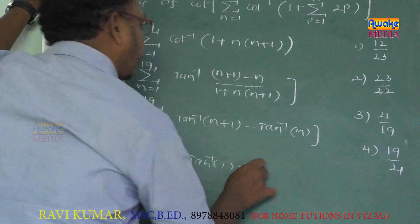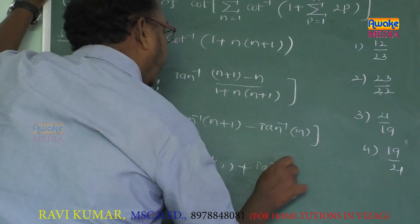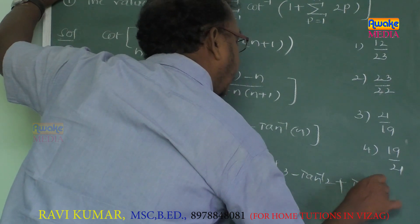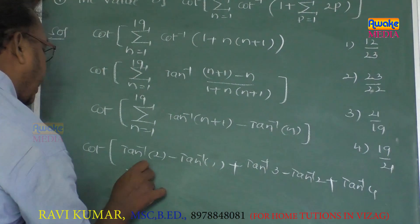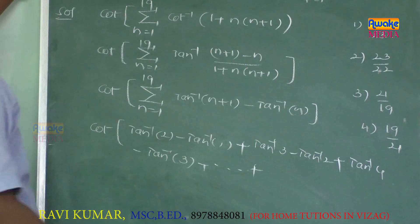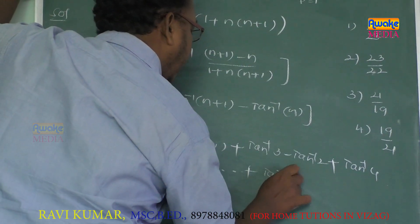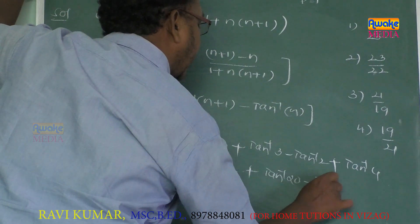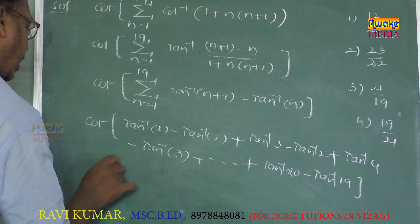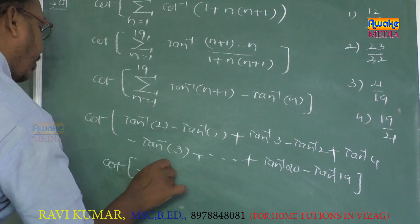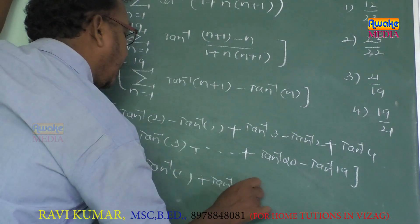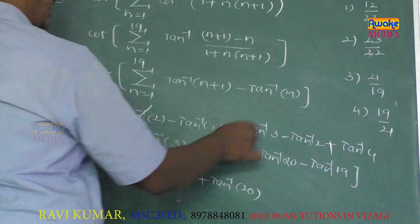Expanding the sigma: take n=1, that is tan⁻¹2 minus tan⁻¹1; n=2 gives tan⁻¹3 minus tan⁻¹2; n=3 gives tan⁻¹4 minus tan⁻¹3, and so on. This is a telescoping series — the intermediate terms cancel, and the remaining terms give the final result.